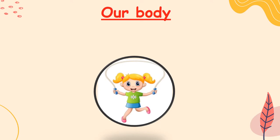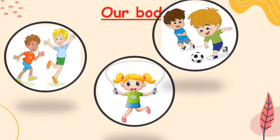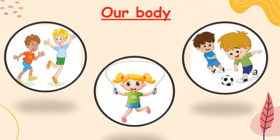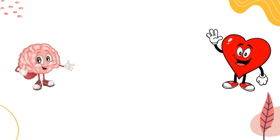Our body is an amazing thing. We have many parts in our body and each part has a job to do. Let's learn about three main parts we need to function. They are the brain, which is inside our head, and the heart, which is inside our chest. When you touch the left side of your chest, you can feel the heartbeat. It pumps the blood around our body.